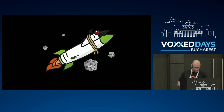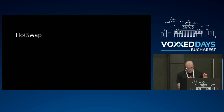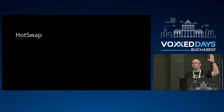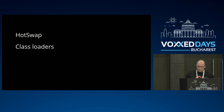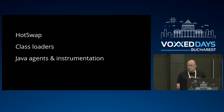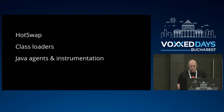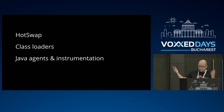That was the last demo and I'm almost in time. So what we learned today about hot swap — was there something new you learned today? My job here is done. Class loaders — probably not really new, but you can think of the frameworks that implement those kinds of things: Tapestry, Play, and many others. Java agents and instrumentation — it's actually a broad topic about transformations and bytecode manipulation, but at least now you know about the entry points: agents and the instrumentation API.